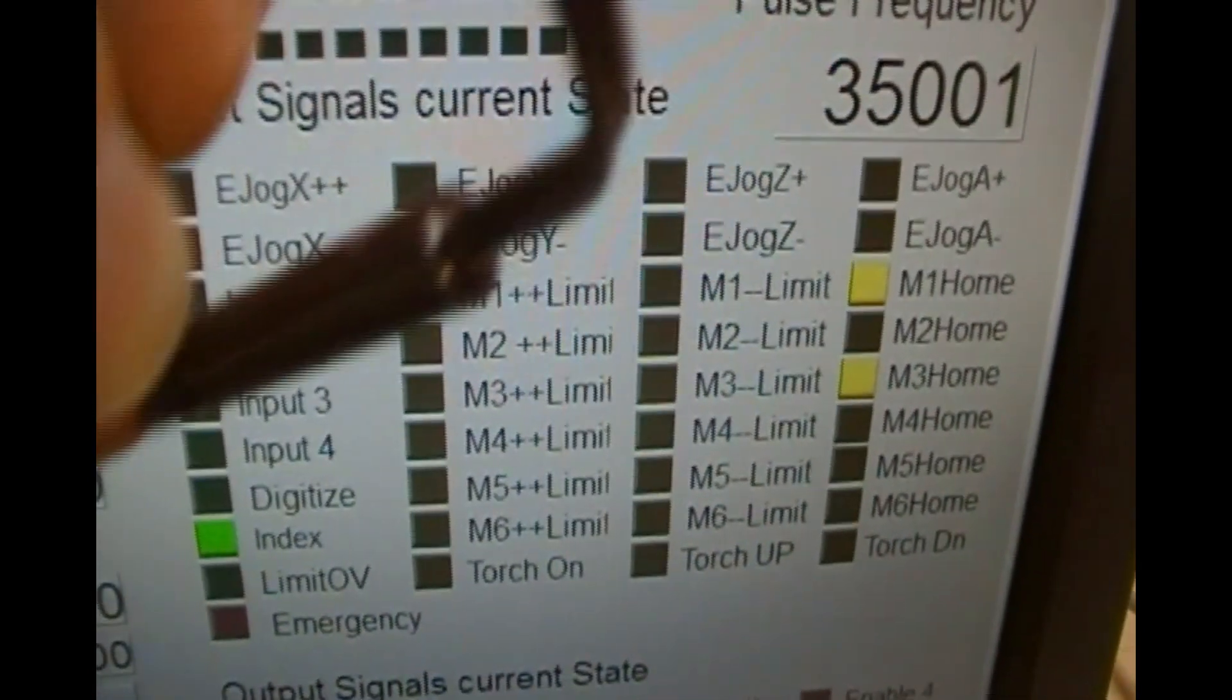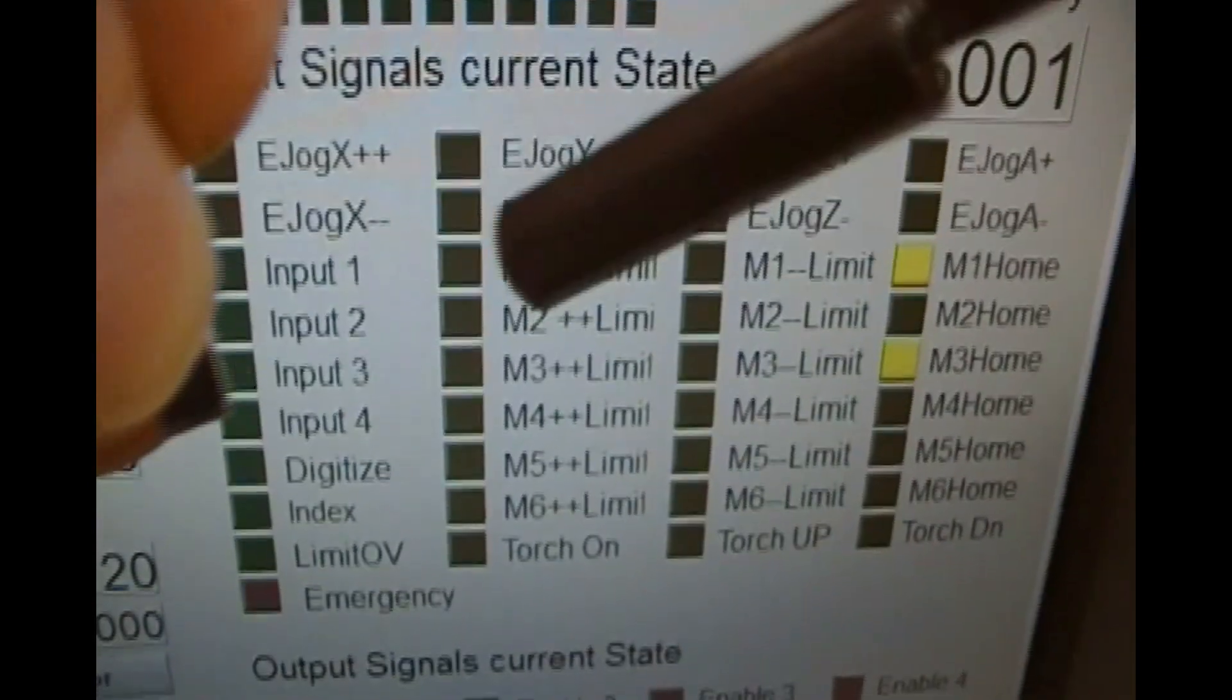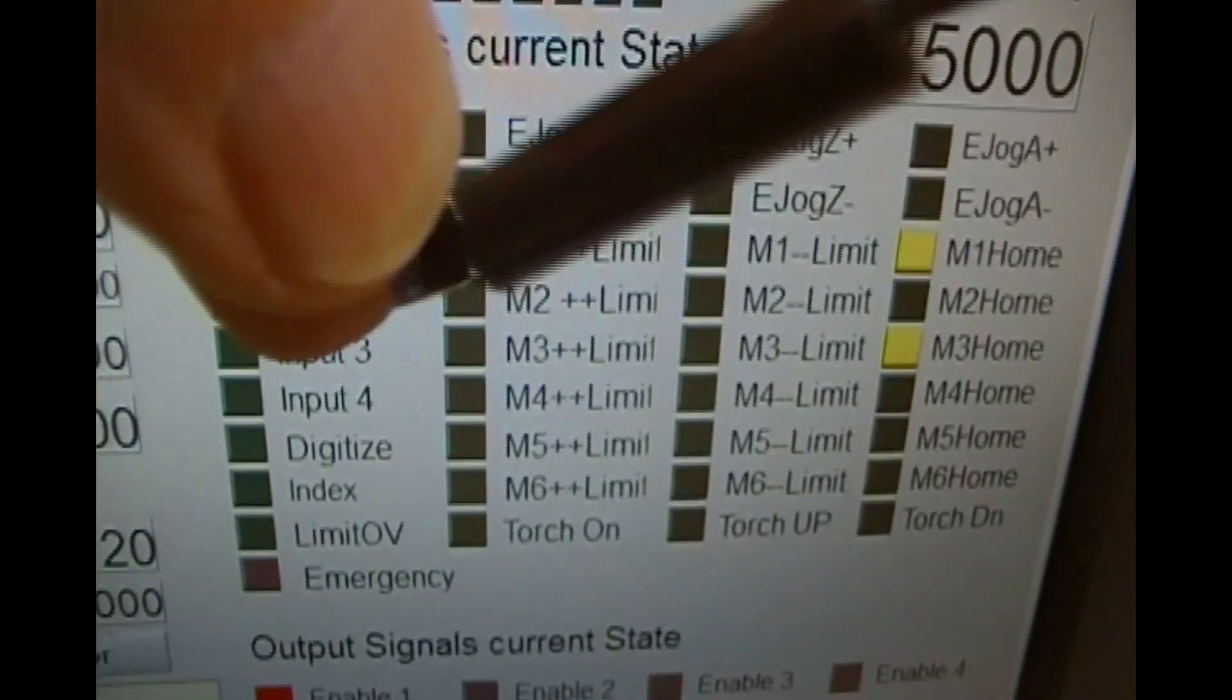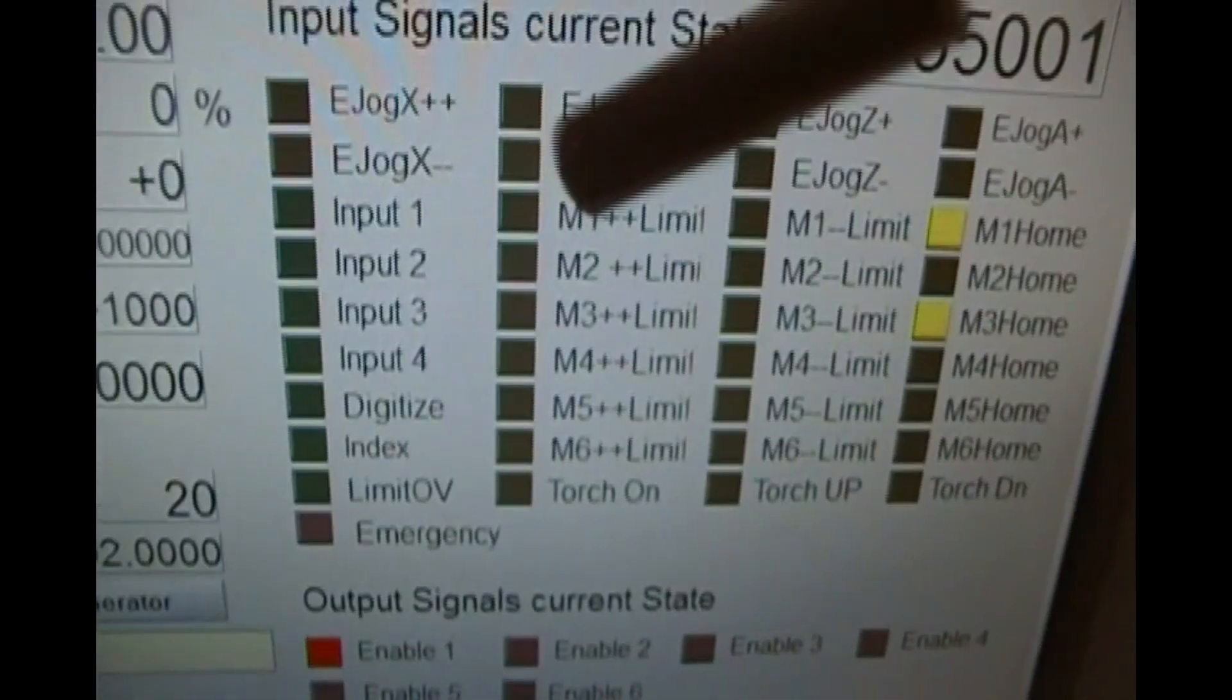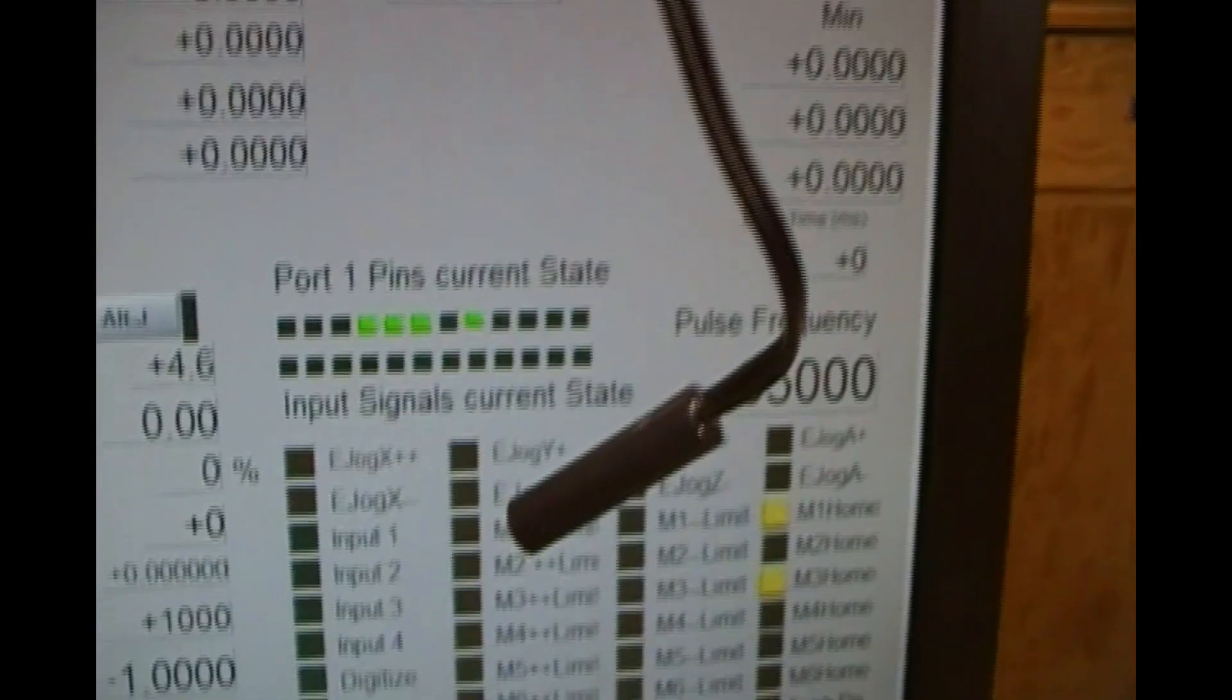I tested that the reed switch is connected and working properly. I used a diagnostic screen of Mach 3. The index light turns on when a magnet approaches the face of the reed sensor and turns off when the magnet is removed, indicating that it is working.